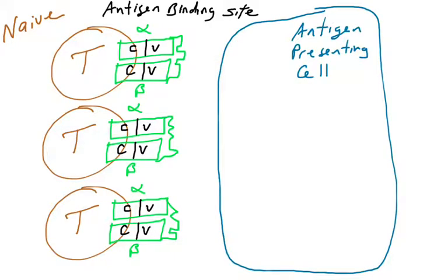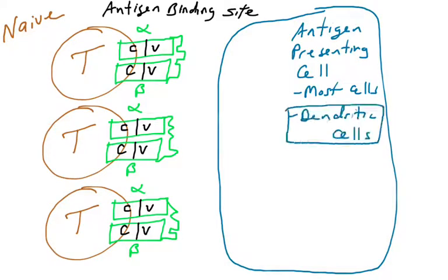Where do we find antigens for T cells? We find them presented on the surface of cells, using the concept of antigen-presenting cells. Most cells in the body can perform antigen presentation, but the one we talk about most is the dendritic cell. Dendritic cells are phagocytes — they perform phagocytosis to take in pathogens and can also become infected by pathogens such as viruses. When they get pathogens inside themselves, they present these pathogens to T cells.